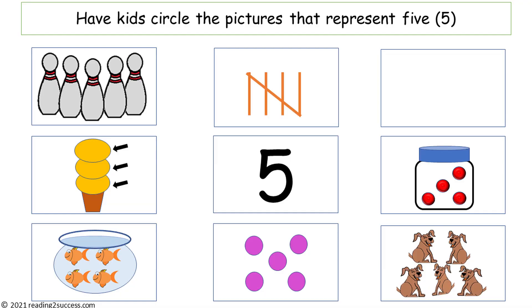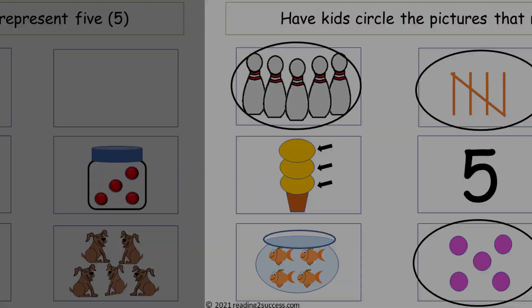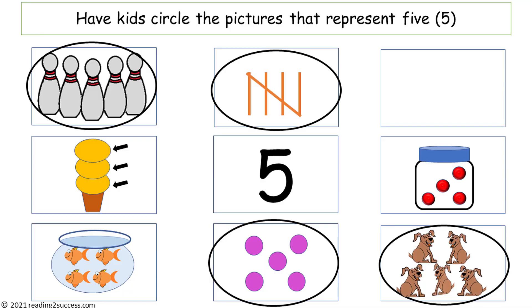Have kids circle the pictures that represent the number 5. And they are five bowling pins, five tally marks, five purple dots, and five dogs.